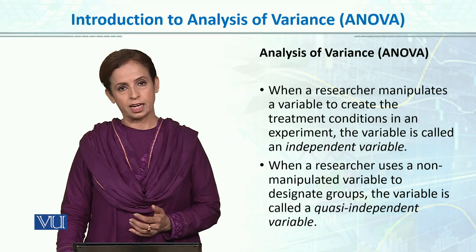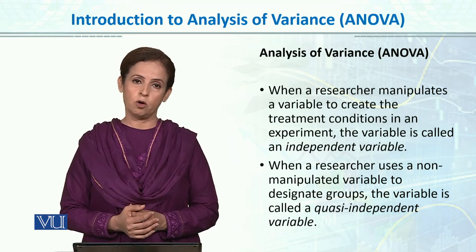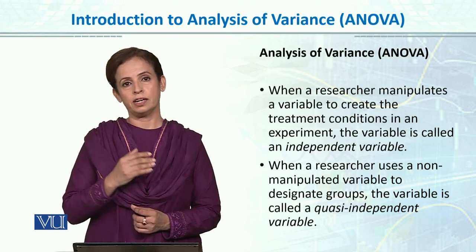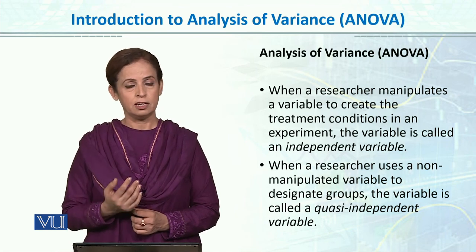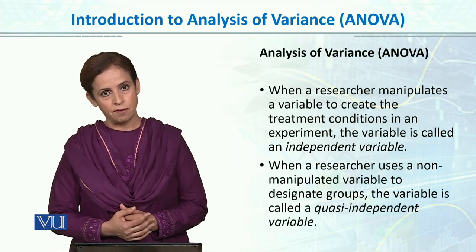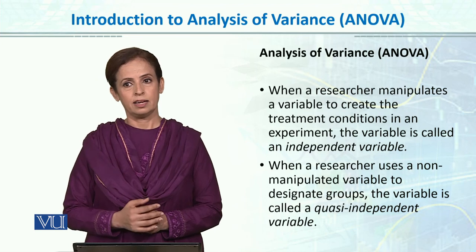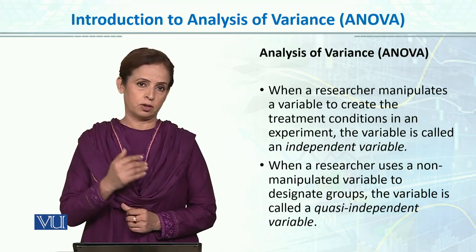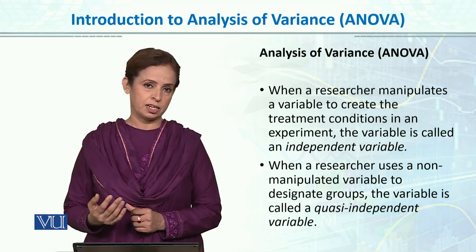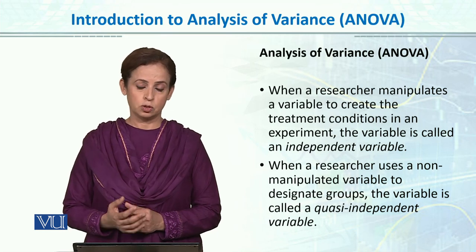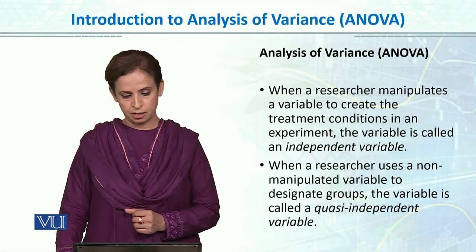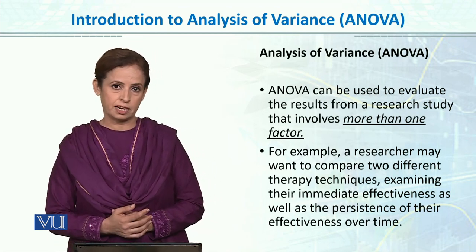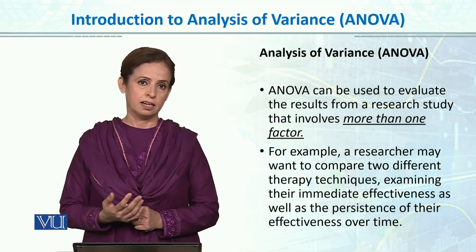Always remember: for ANOVA or t-test, whether quasi or experimental, the independent variable is always categorical — it has different levels. In t-test, we compared males and females, so gender was categorical with two levels. Here, phone use has three levels and was manipulated. Group one: no phone. Group two: hands-free. Group three: direct phone use. Phone use is the independent variable — categorical and manipulated. The dependent variable is always continuous, such as driving performance, learning curve, or a running score.